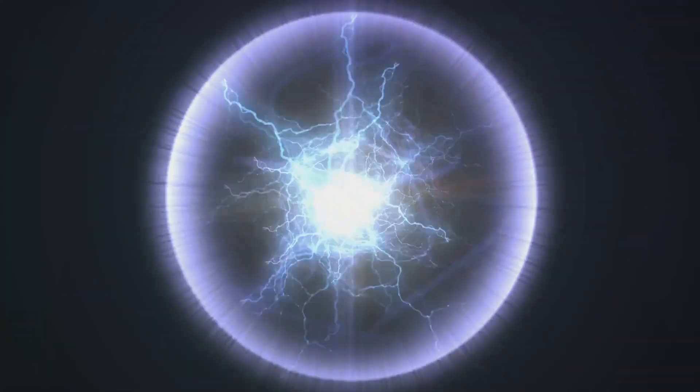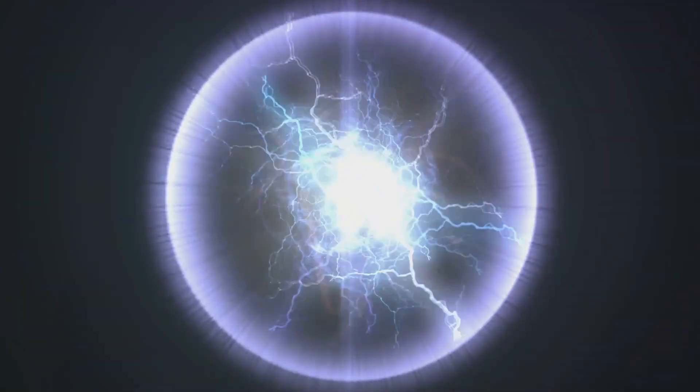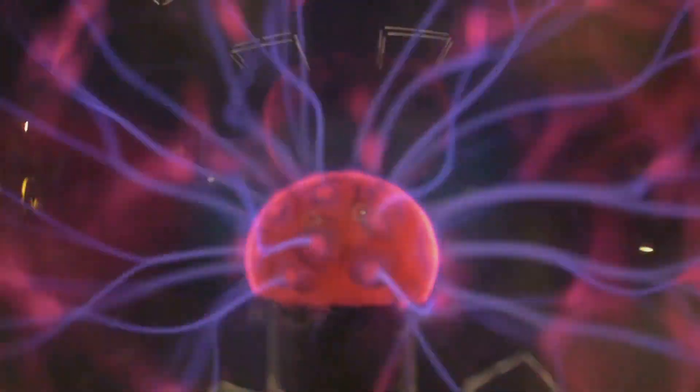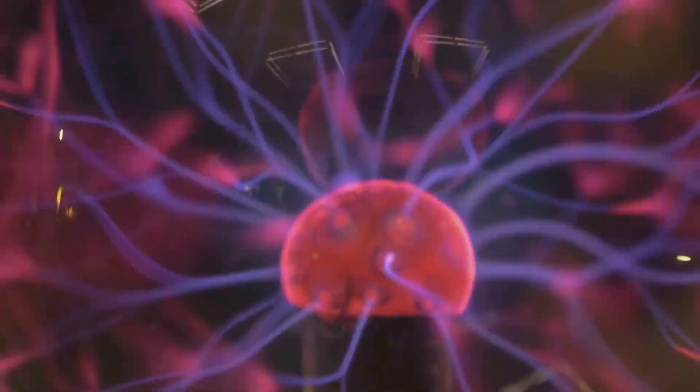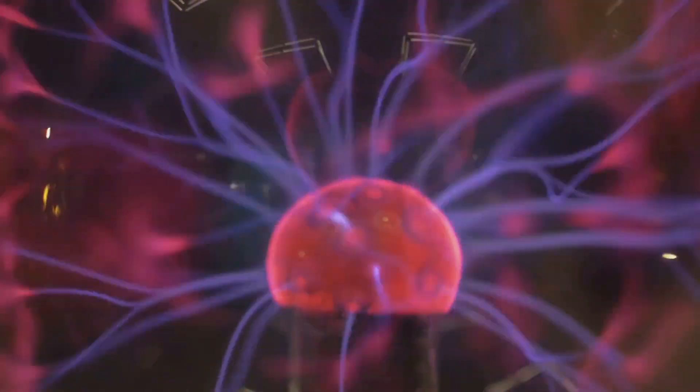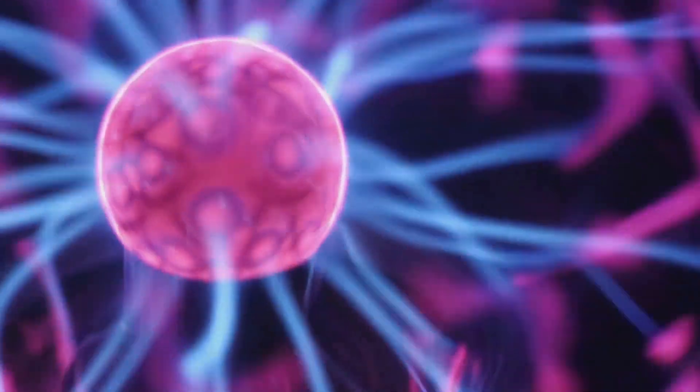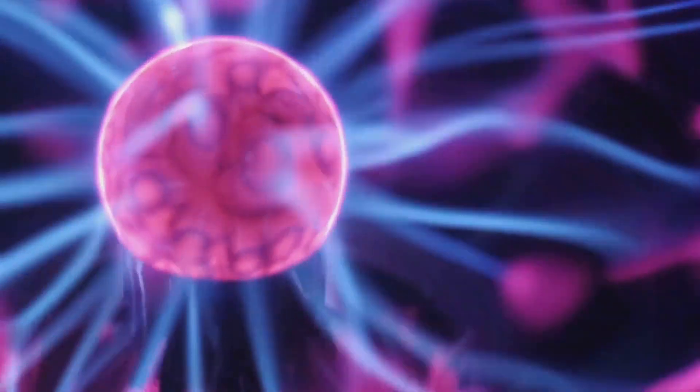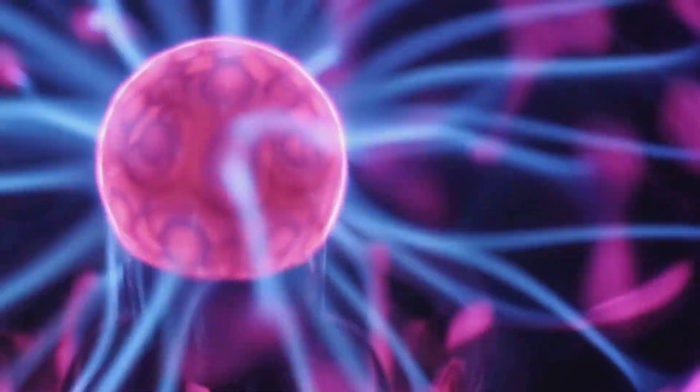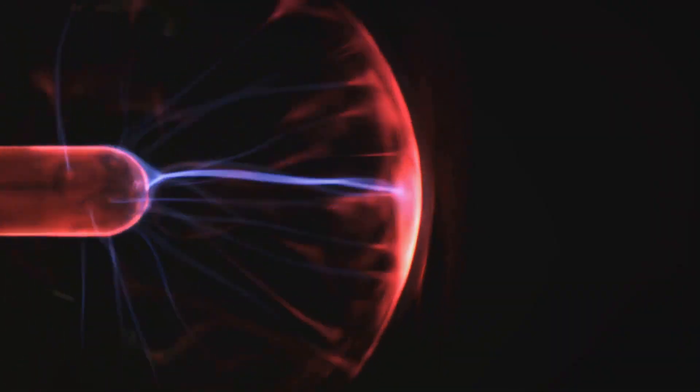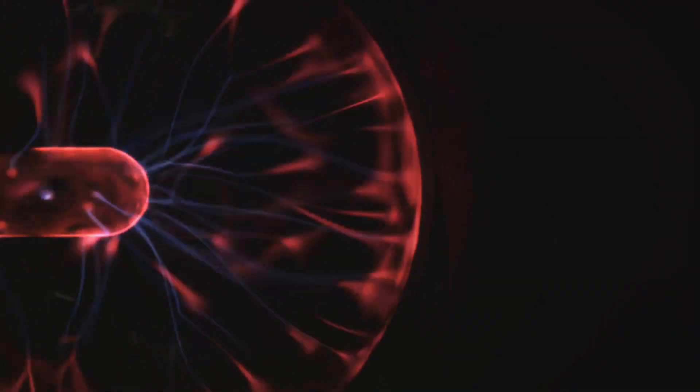So you might be wondering, what evidence supports this shocking theory? Well, let's dive right into it. The Electric Universe theory, like any scientific theory, is based on a collection of observations and deductions. Proponents of the theory point to a wide range of phenomena, from the behaviour of plasma in laboratories to the vast filamentary structures observed in the cosmos as evidence of a universe governed by electromagnetic forces.